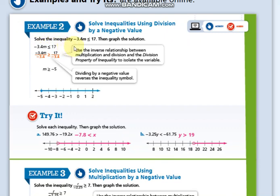In example number two, you have to do the same, but here we have a very important procedure. Be aware of it. The factor here is a negative number. In order to isolate M, I need to divide over a negative number.